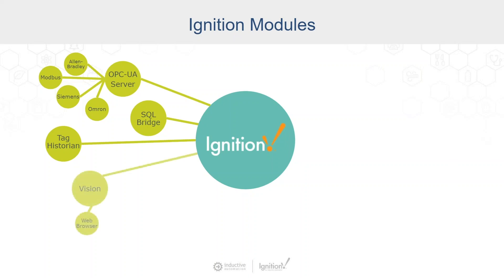Then maybe we want to visualize that. We have a desktop visualization that we can bring into the mix. Modules can also have things added to them — a web browser is an example that we can add to Vision, and drivers that we can add to our OPC server. And then there's Perspective to bring visualization to the browser — pure web, native HTML5 and CSS, with native apps for iOS and Android. So we can see the data that we're bringing into the system. These are some examples of modules in that core layer.